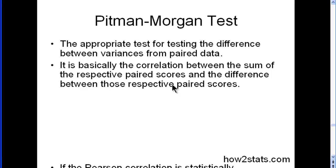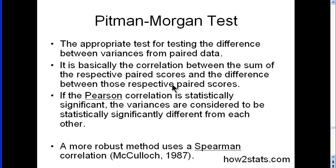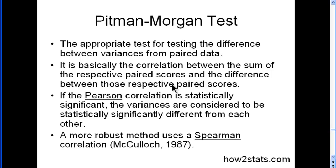If you get a statistically significant correlation — whether positive or negative — that means the variance at time one, or pair one, is statistically different than the variance at time two. There is also a more robust method for the Pittman-Morgan test, where instead of using the Pearson correlation, you actually use the Spearman correlation.